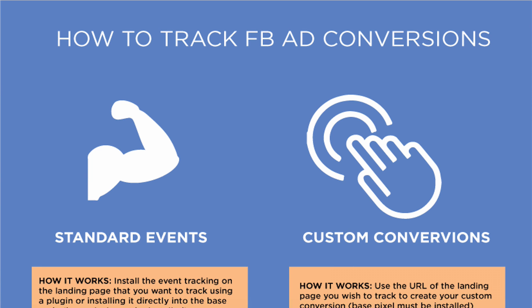There's no excuses — it has to be there. If you're not sure how to do that, make sure you watch the pixel training video. Assuming that you have the pixel installed on the website, there are essentially two ways to track conversions — people purchasing, people opting into an email, people requesting a quote. The first way is to use a standard event, and the second way is to use a custom conversion.